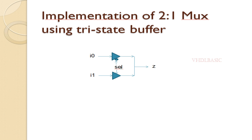When select is 1, the first buffer is disabled, which means the output will be assigned as high impedance. The second buffer is enabled, so whatever is present in I1 will be assigned to output Z. This is how we implement the 2-to-1 MUX using tri-state buffers. Now I am going to implement this in Verilog and simulate it to show you the result as well.